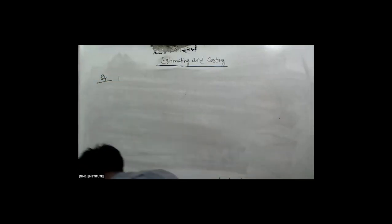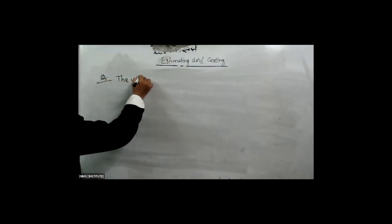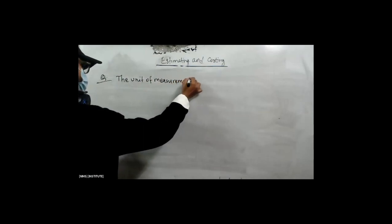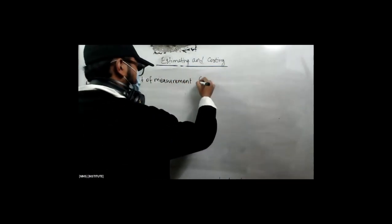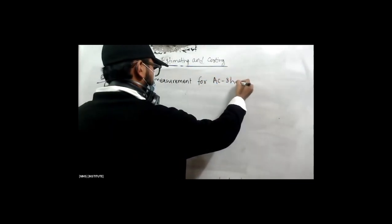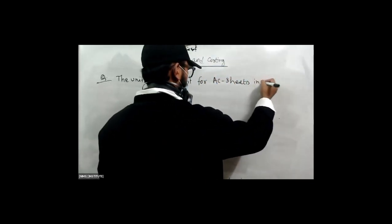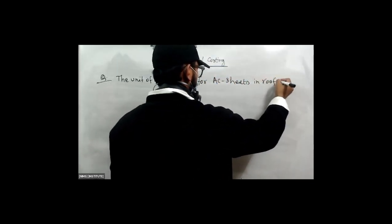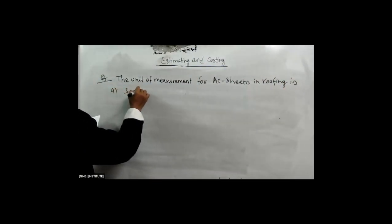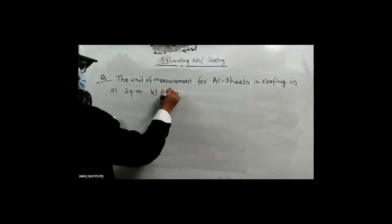The unit of measurement for AC sheet in roofing is often square meter or cubic meter.